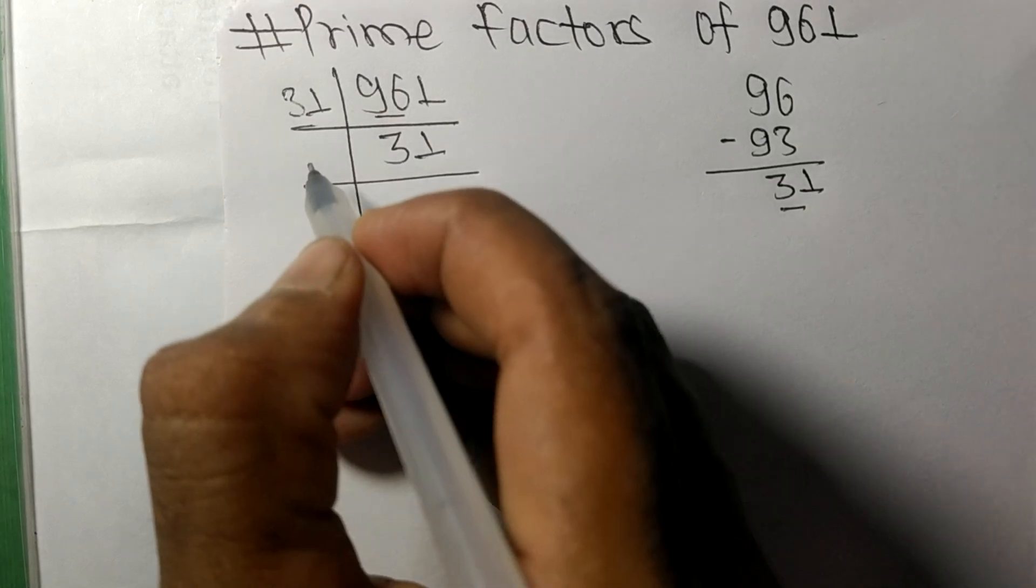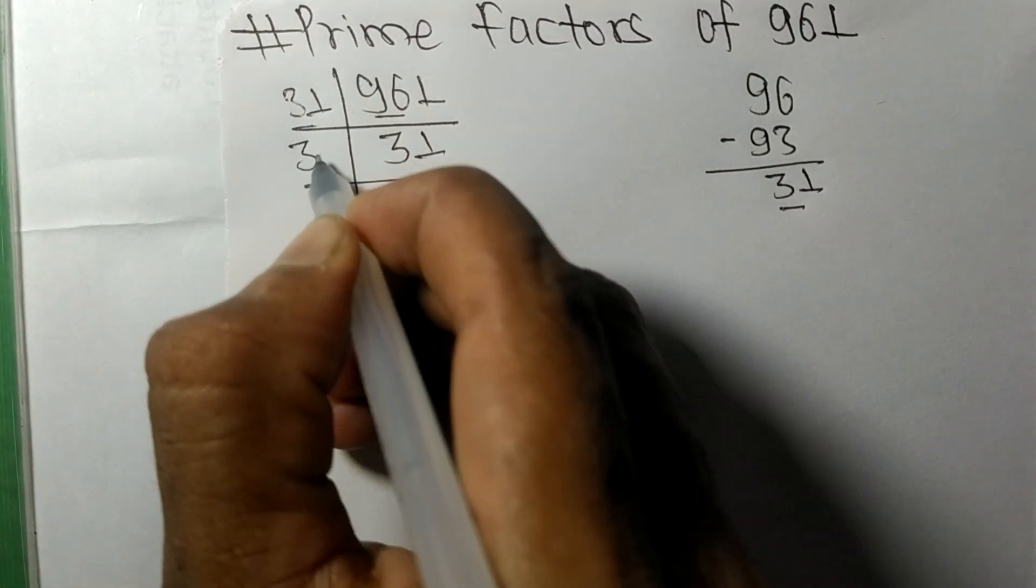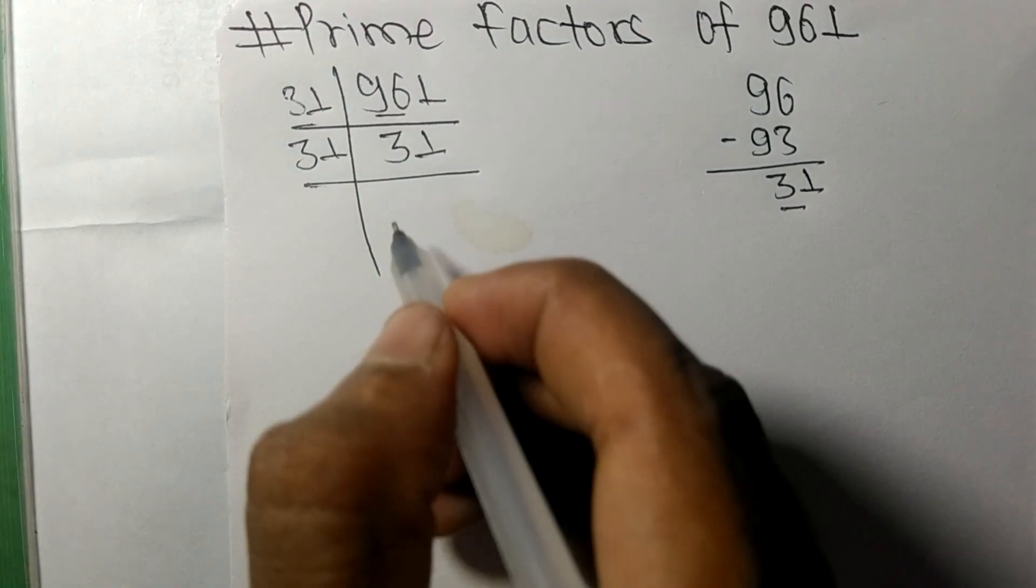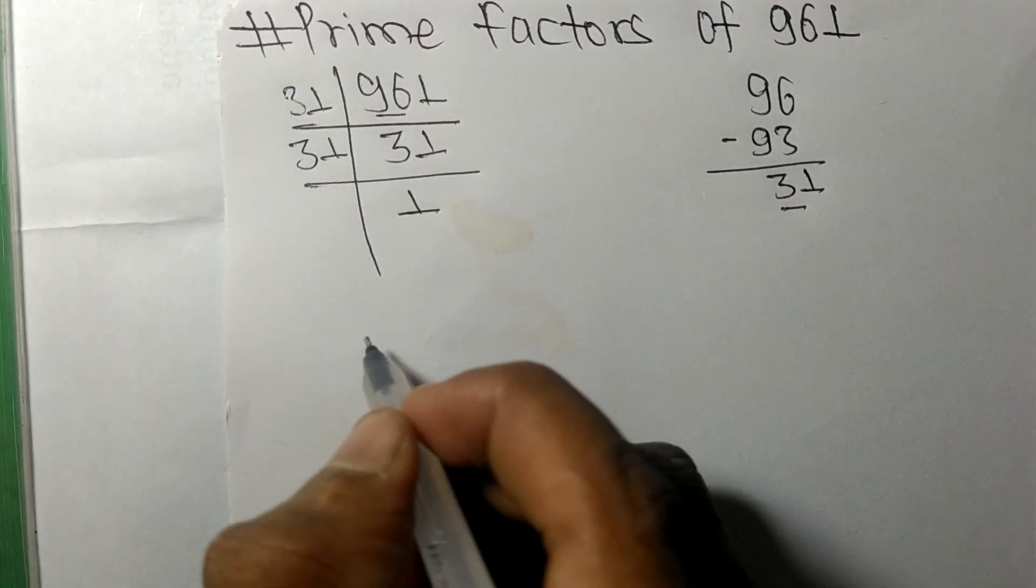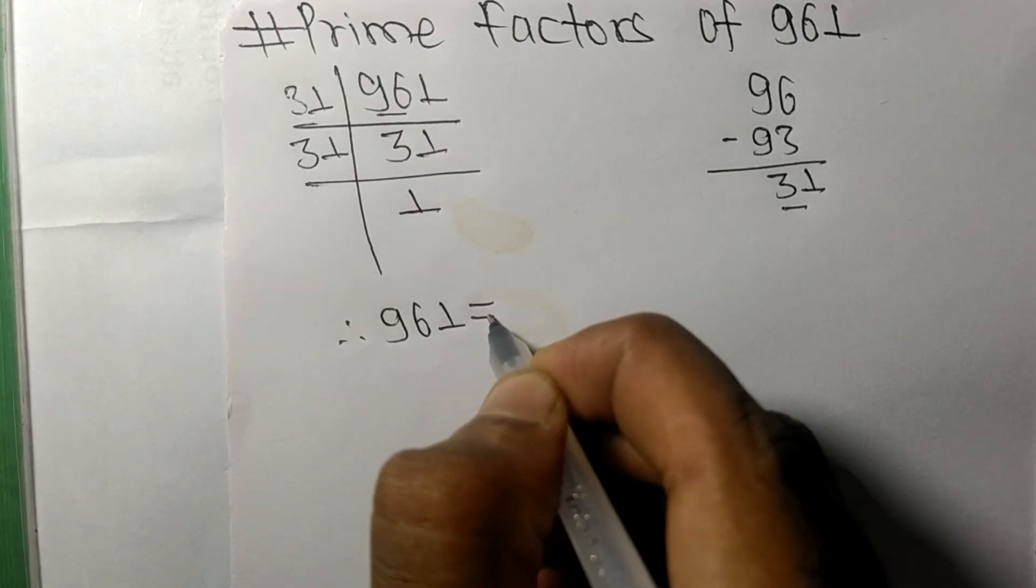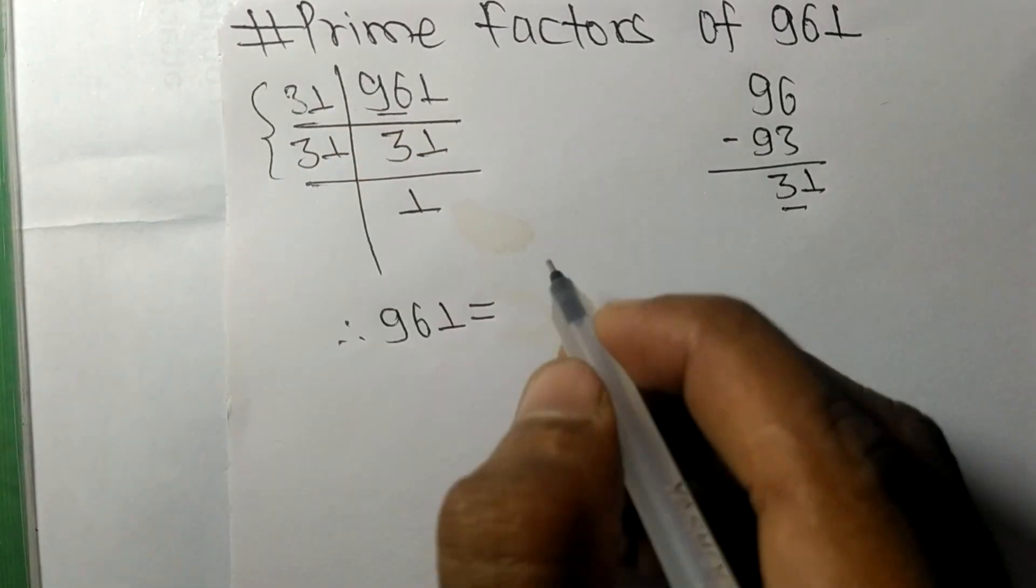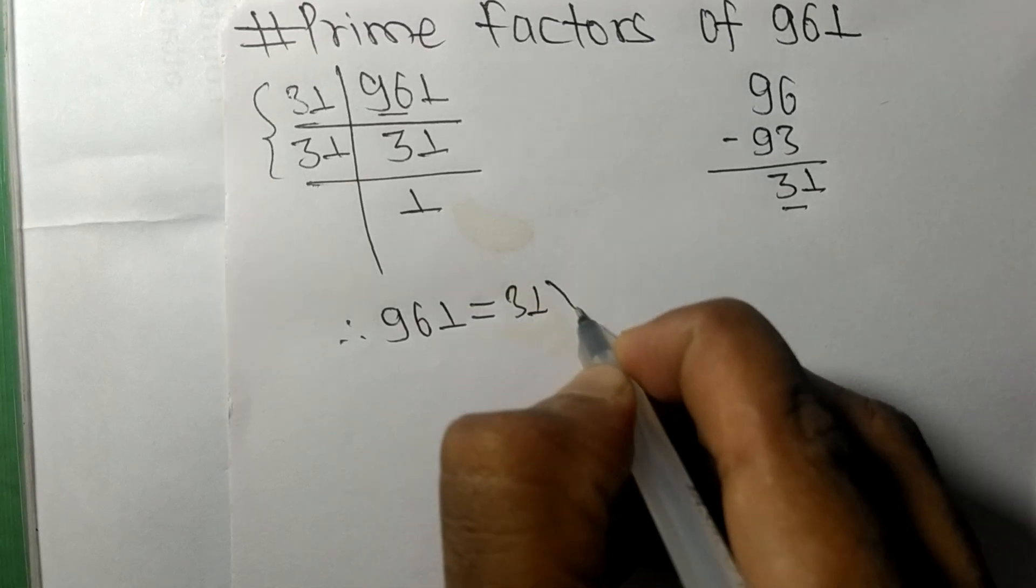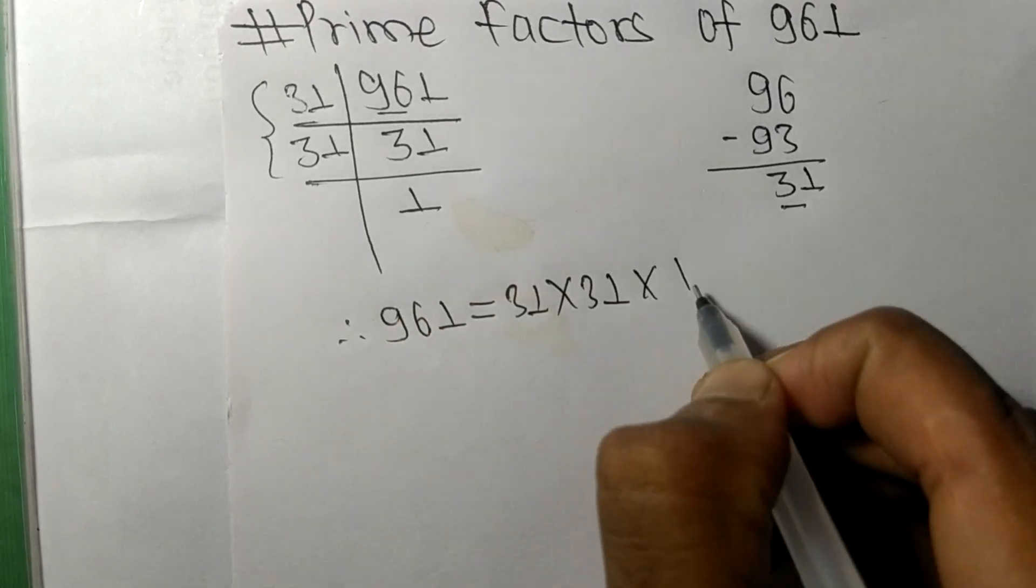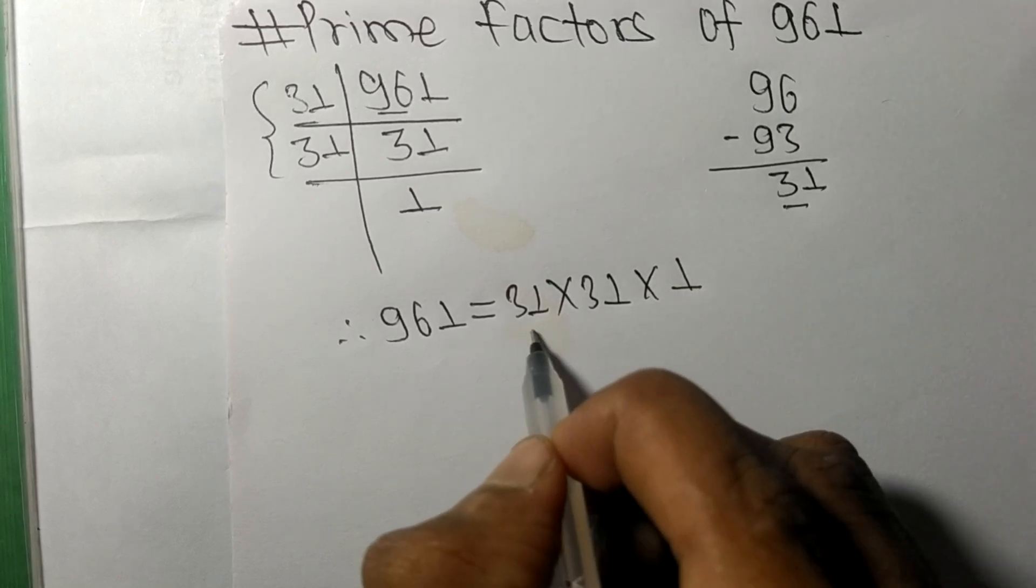And on dividing we get 1. Therefore 961 is equal to, from this side it is 31 times 31, from here it is 1.